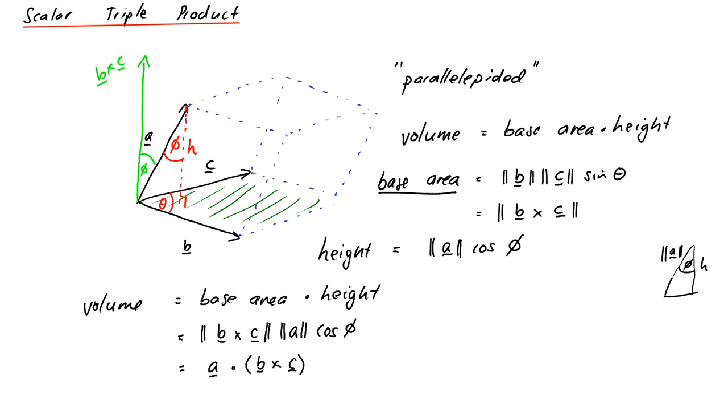So that's quite nice. We can just therefore write this as the dot product of A and B cross C. Now there's one little subtlety here that I haven't mentioned, and that's that this could turn out to be negative. So if we're literally wanting the volume, we take the absolute value of this expression.